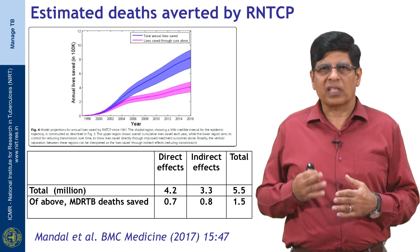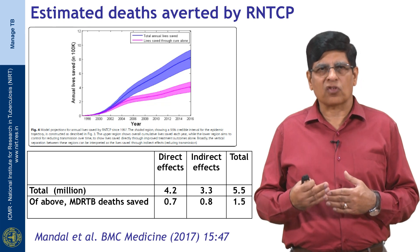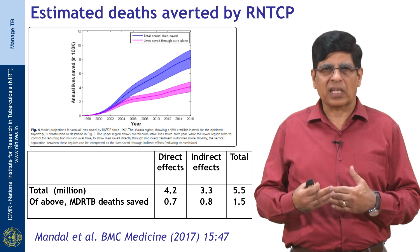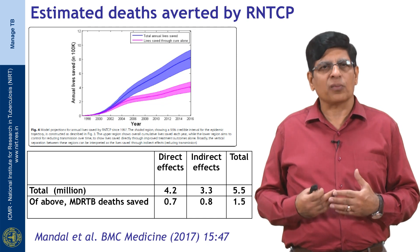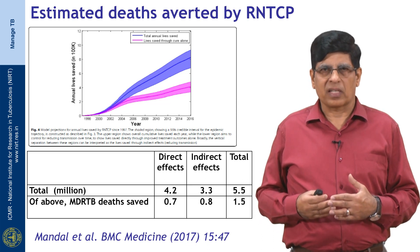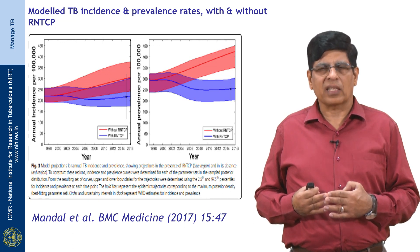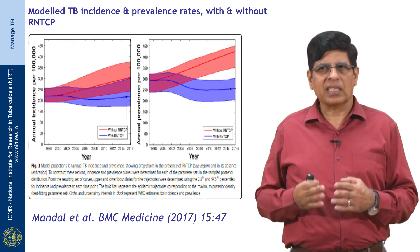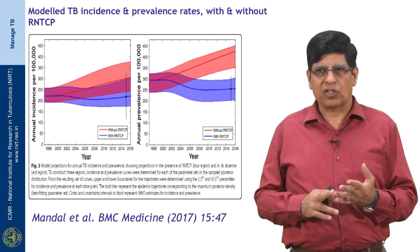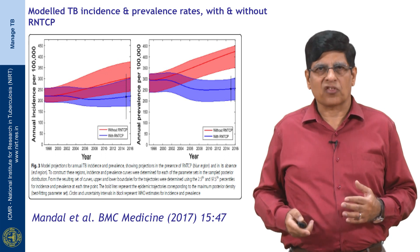Of MDR-TB deaths saved, 50% are due to the indirect effect of reduced transmission — fewer cases receiving first-line treatment resulted in fewer incident MDR-TB cases and fewer MDR-TB deaths. This highlights the importance of both preventing and curing MDR-TB. While initial years of RNTCP saw a decline in prevalence and incidence, the model shows rates then stabilized, primarily due to increasing population size, life expectancy, and prevalence of diabetes, which work in the opposite direction to RNTCP.